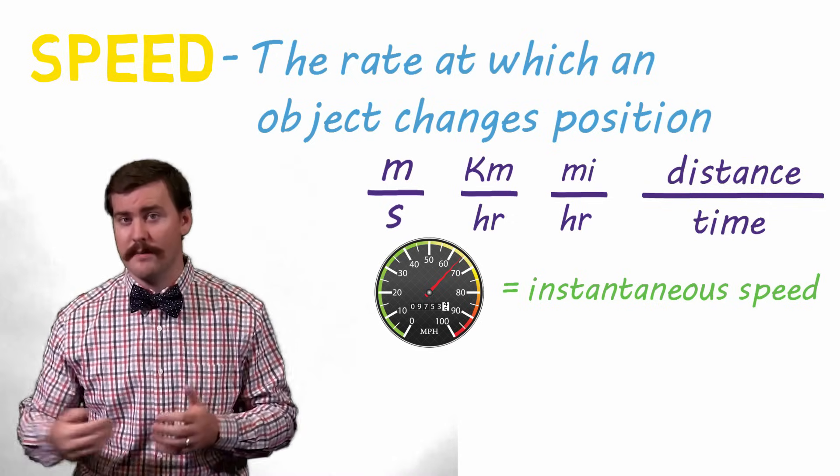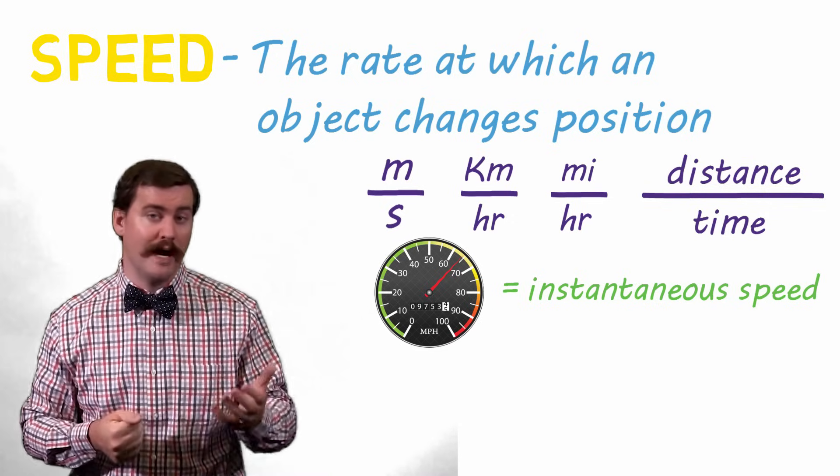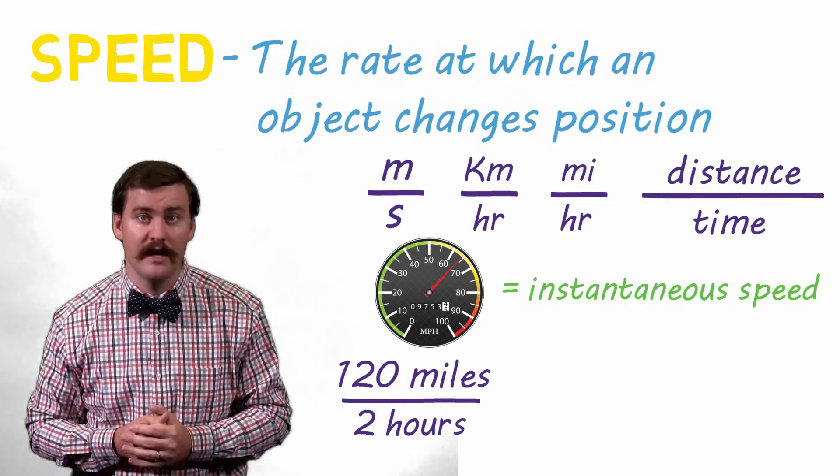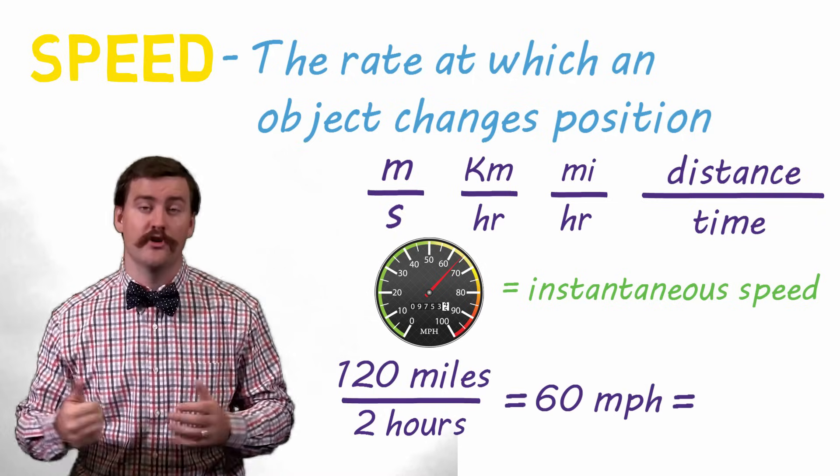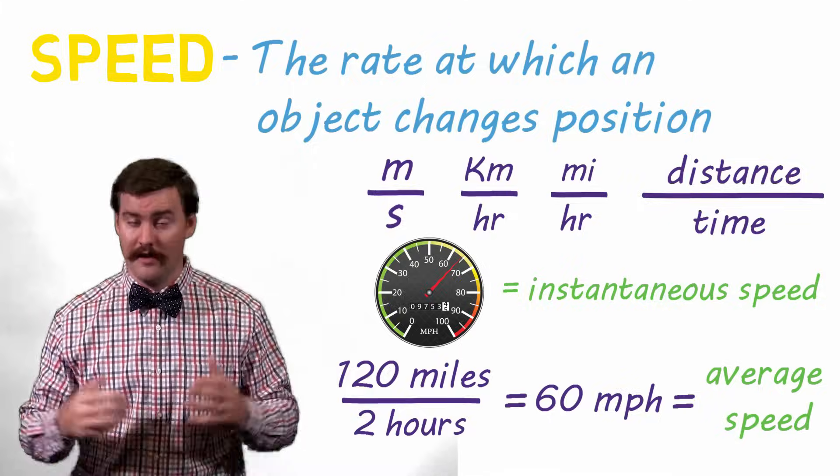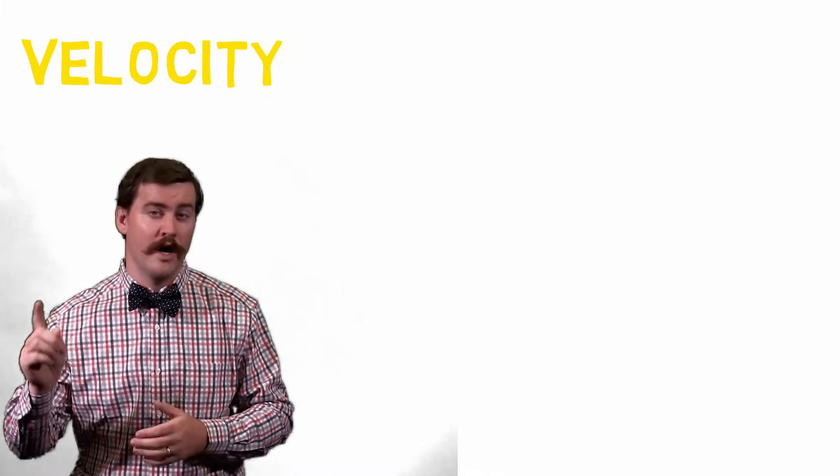If you get to the end of your trip and realize that it took you two hours to drive 120 miles, then your overall speed was 60 miles per hour. And this is also known as your average speed. Velocity is a lot like speed except for one important difference.